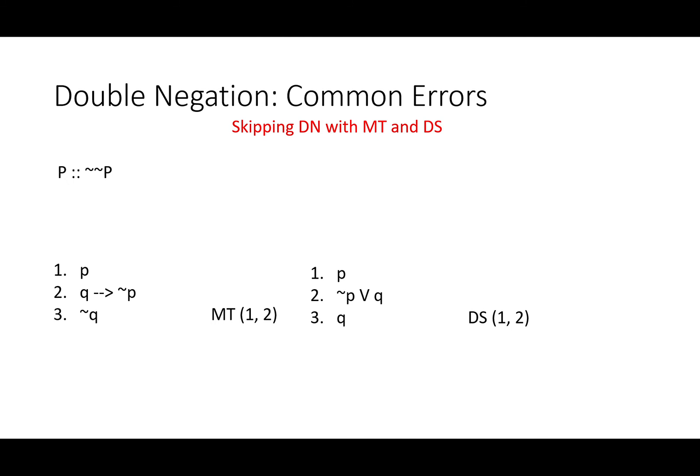So we might skip this rule, especially with modus tollens and disjunctive syllogism and go straight from P and if Q then not P to not Q or from P and either not P or Q to Q.